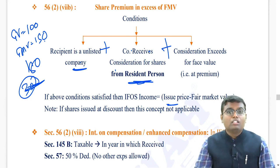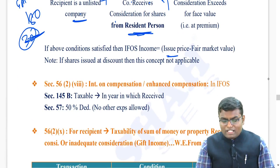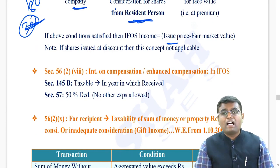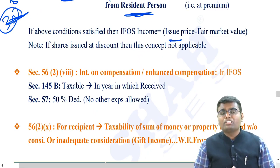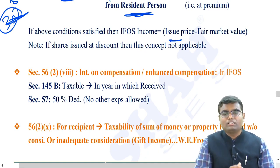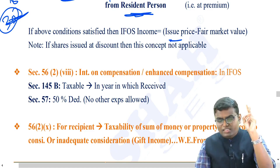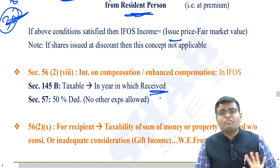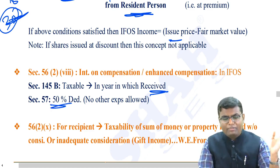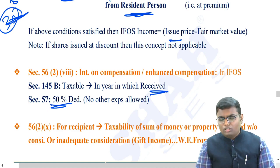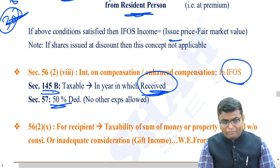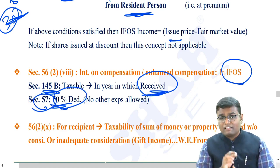Section 56 subsection 2 clause (8) - interest on compensation or interest on enhanced compensation. Whenever you are receiving interest on compensation or enhanced compensation because the government paid you the compensation late, that interest will always be taxable in the year of receipt. It won't be fully taxable - it will be taxable after taking 50% standard deduction, as per section 57. Once you have taken 50% standard deduction, you can't claim any other deduction. So: interest on compensation always taxable under IFOS in the year of receipt per section 145B, after 50% standard deduction per section 57.